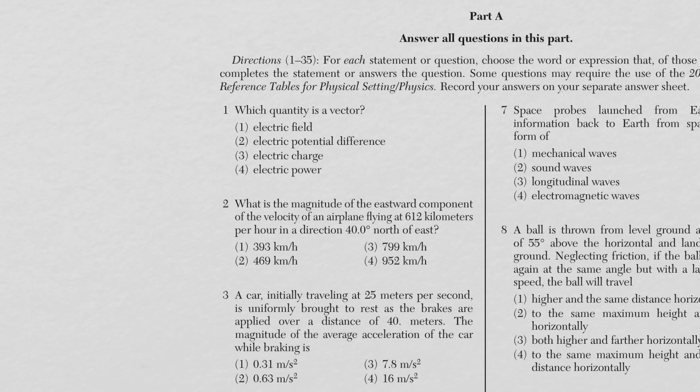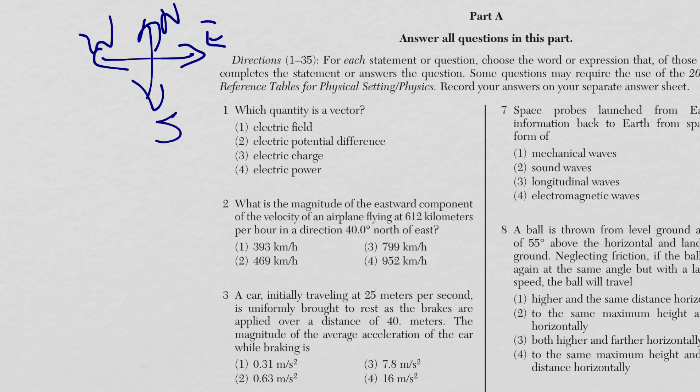Question two asks for the magnitude of the eastward component of the velocity of an airplane flying at 612 kilometers per hour in the direction 40 degrees north of east. A picture really helps here. Drawing compass directions, the plane is traveling 40 degrees north of east, and we want the eastward component — the adjacent side of the triangle — given the hypotenuse of 612 km/h.